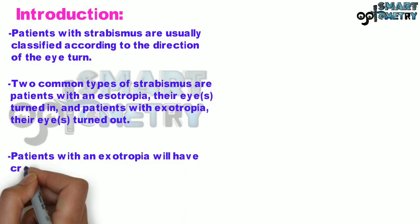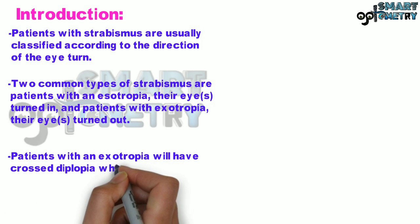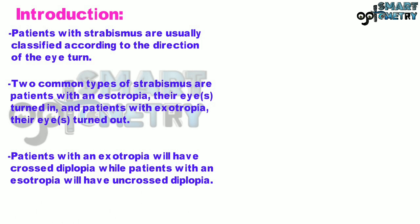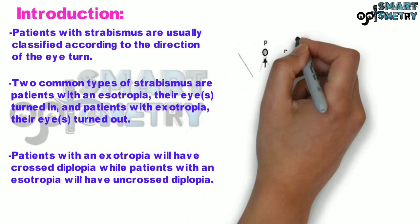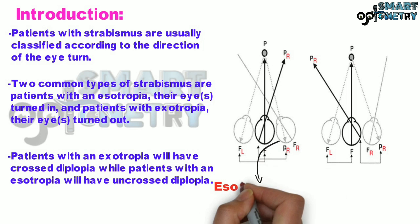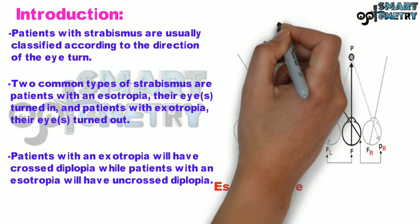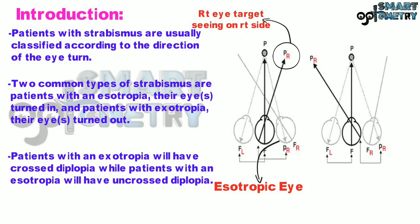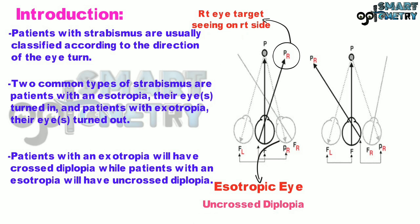Patients with exotropia will have crossed diplopia, while patients with esotropia will have uncrossed diplopia. In the first diagram alongside, you can see the esotropic eye where the image of the target is seen on the same side as the misaligned eye — the right eye target is seen on the right side. This is called uncrossed diplopia.